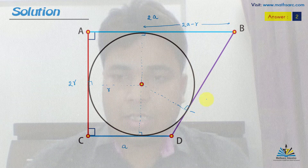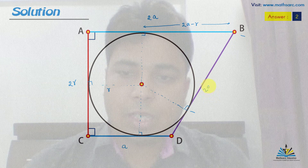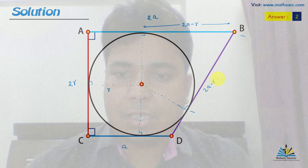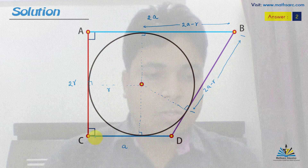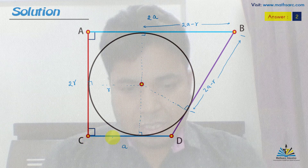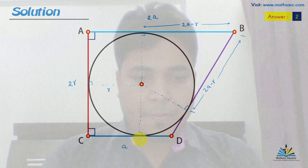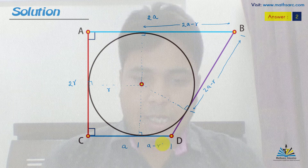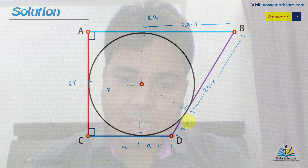Similarly, this length will also be 2a minus R. Now, we also know that the radius is R and the CD length is a, so the tangent length from D on CD must be a minus R. Hence, this length is also a minus R.